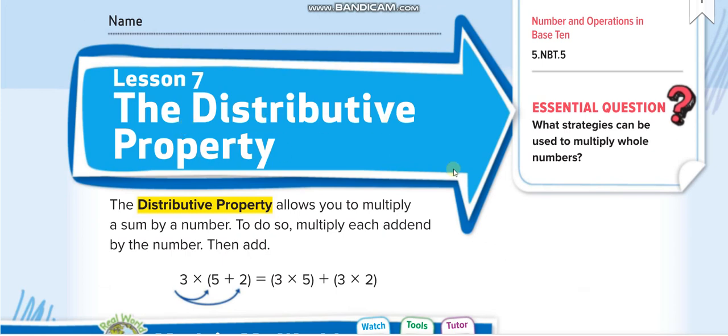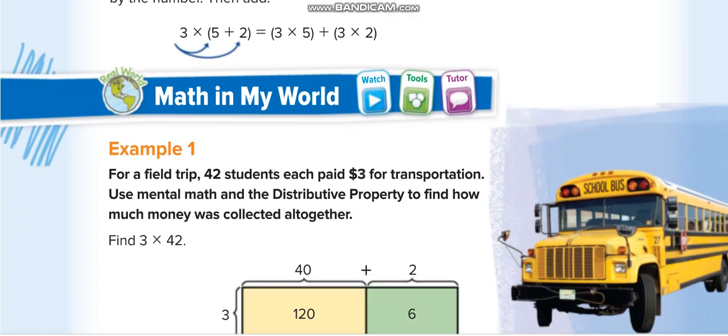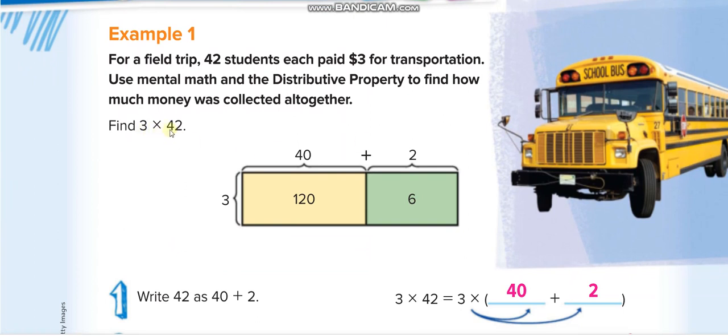In distributive property, when we have two numbers to multiply like in the first example about a field trip where 42 students each paid $3 for transportation, we use mental math and the distributive property to find how much money was collected together. So basically you have to multiply 42 by 3. It's hard to multiply directly, so we use distributive property.